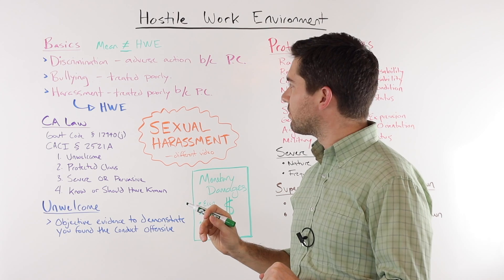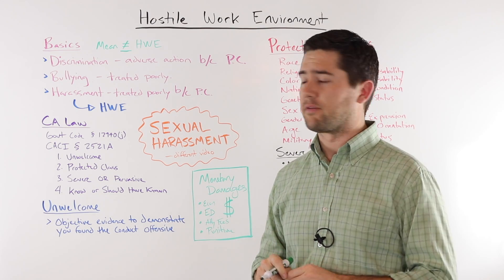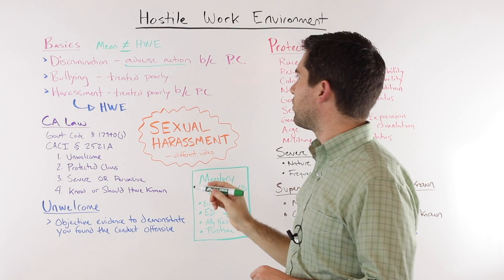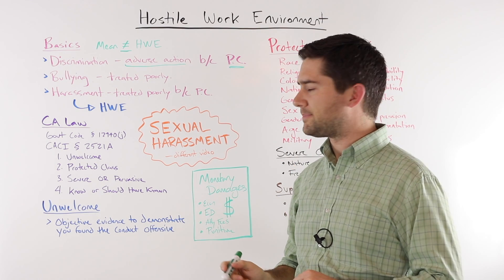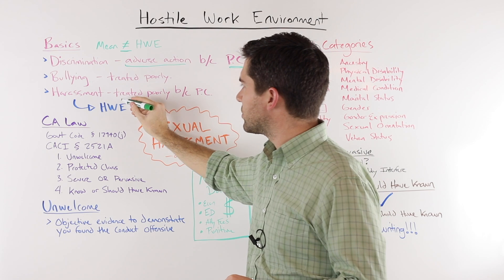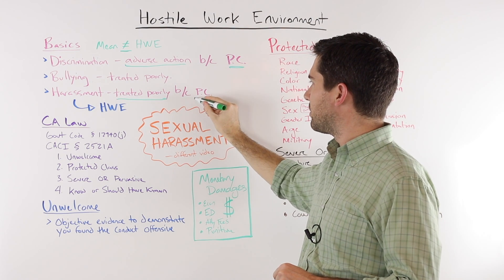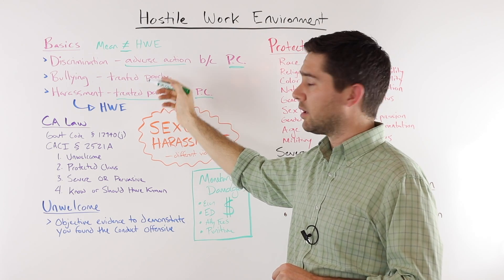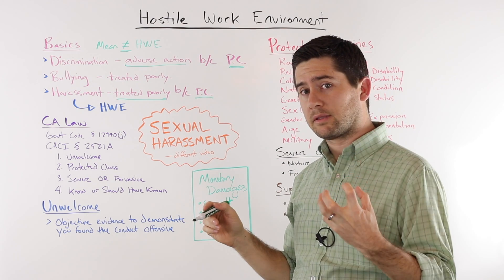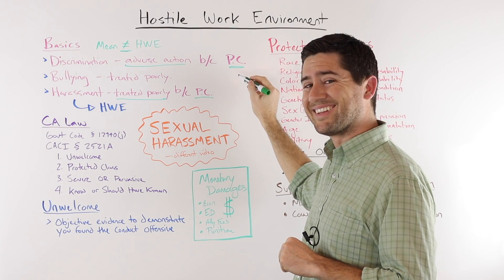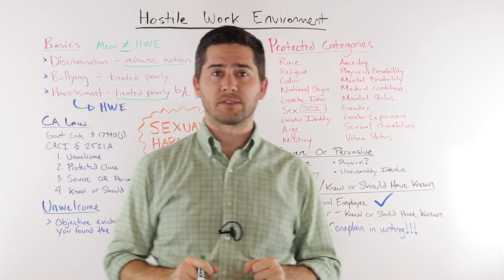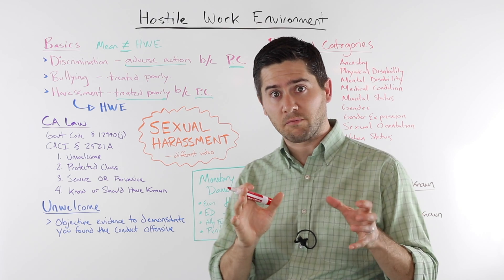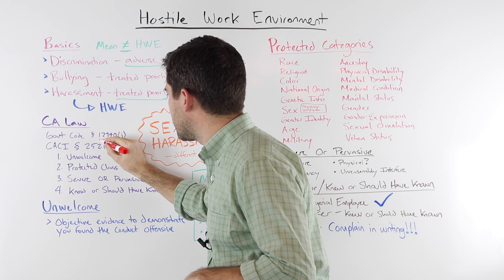Third, you need to understand the distinction between three different things. Discrimination is when a company takes an adverse action against an employee because of a protected characteristic. Harassment is when somebody is treated poorly at work because of a protected characteristic. Bullying, on the other hand, is when somebody is just treated poorly. Discrimination and harassment are unlawful because of protected characteristics. California's hostile work environment law can be found in the California Government Code, section 12940, subsection J.